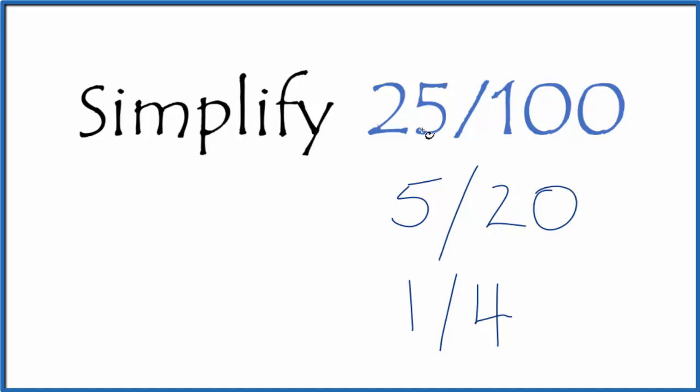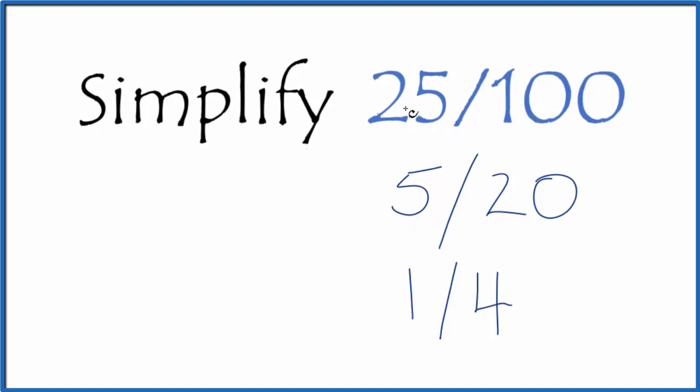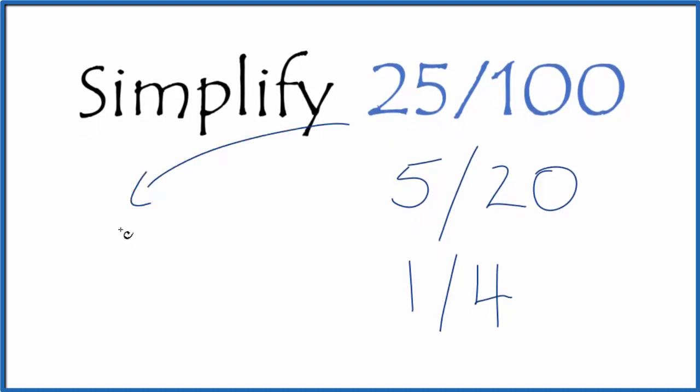If you knew that 25 would divide into 100 evenly, you could have said 25 divided by 25, that would give you 1. And then 100 divided by 25, that would give you 4. And you could have gotten there a little bit quicker.